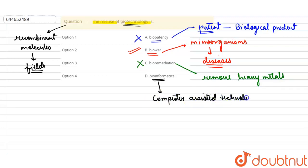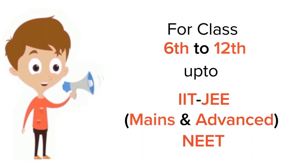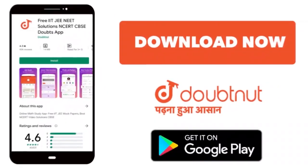So the only misuse is option B: biowar. Option B is the correct option. Thank you. For class 6 to 12th, IIT, and NEET level, trusted by more than 5 crore students, download Doubtnet app today.